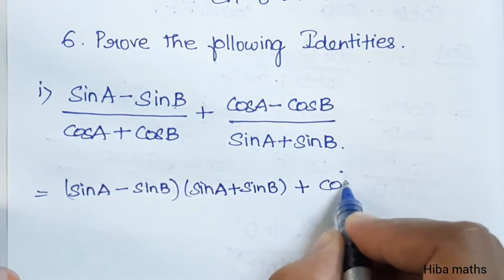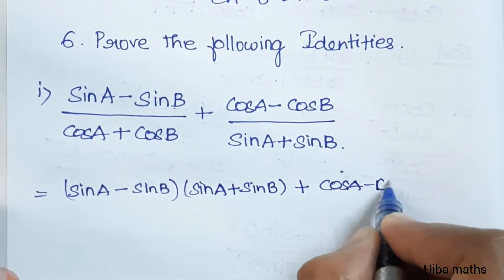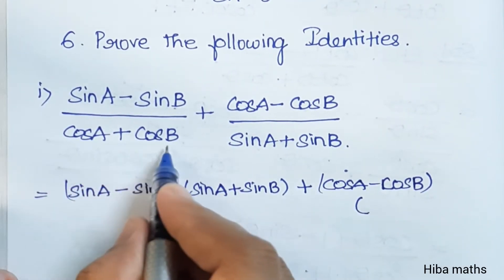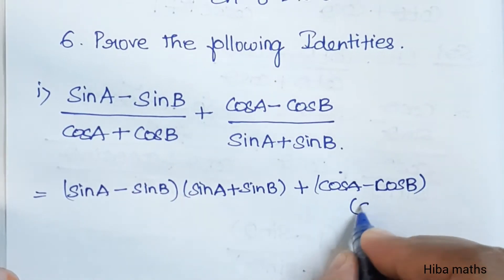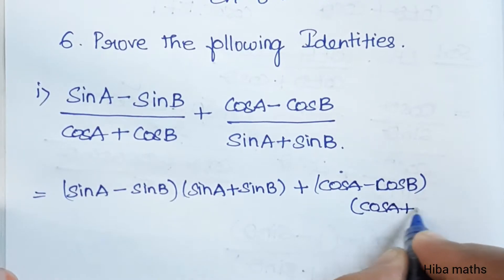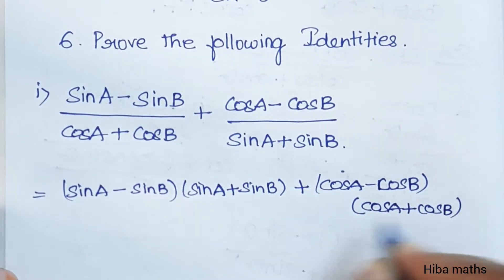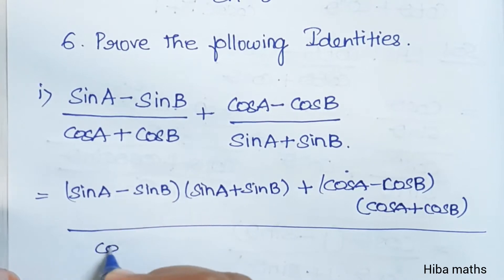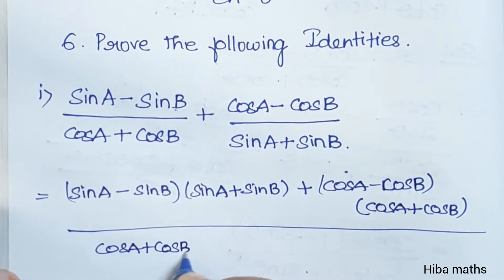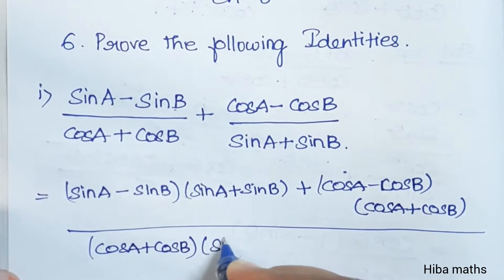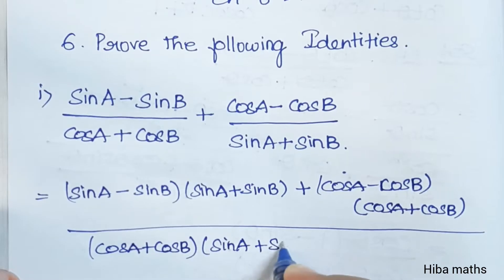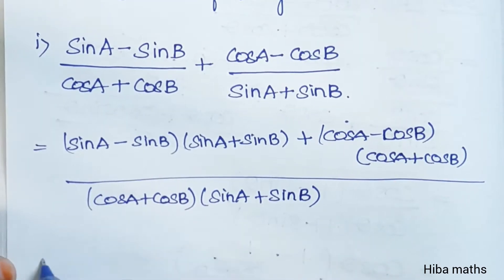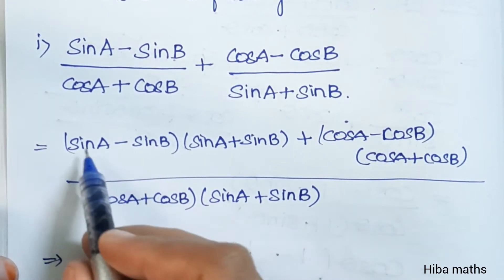cosA minus cosB divided by sinB, cosA plus cosB is equal to cosA plus cosB, and the denominator is equal to two times cosA plus cosB into sinA plus sinB. Next step is how to handle sinA minus sinB times sinA plus sinB.